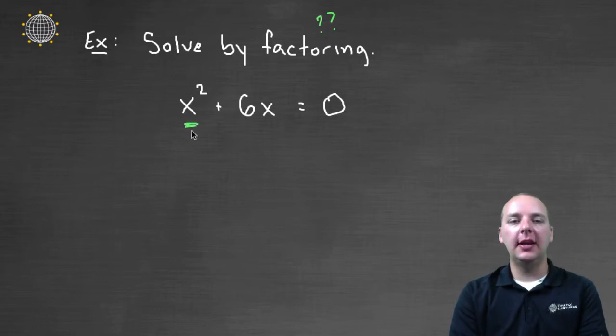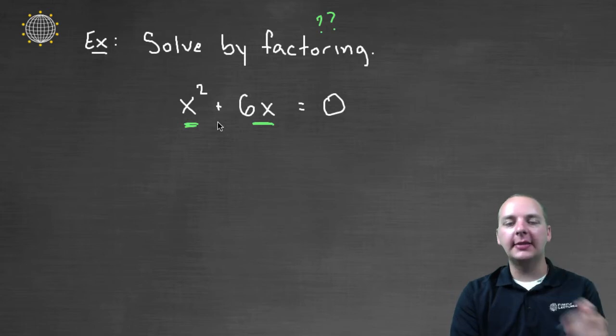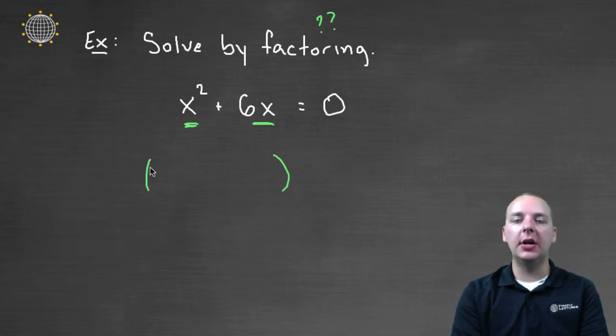When you look at x² and 6x, you'll notice there's a common factor of x. We can factor that x out of these two terms. You can think of it as undistributing an x—we're going to pull an x out of these two terms since it's common to both of them.